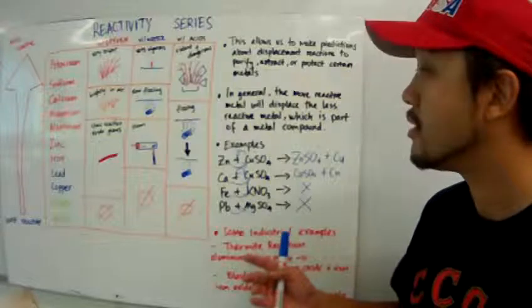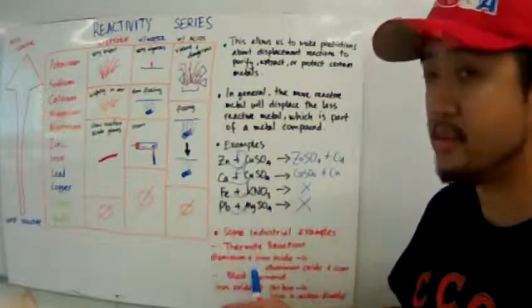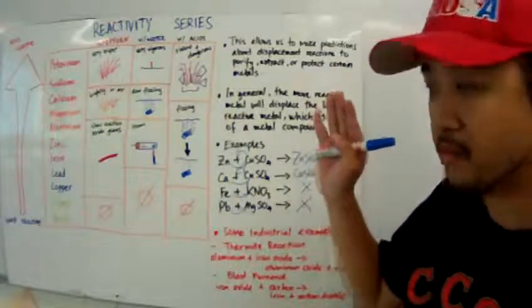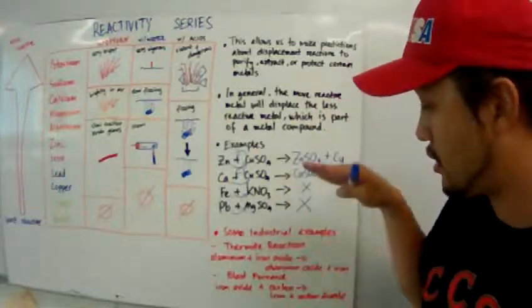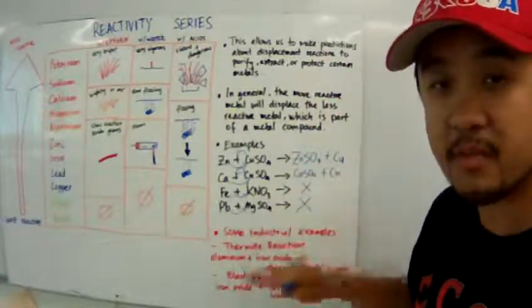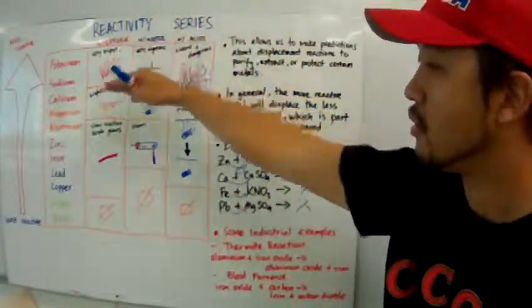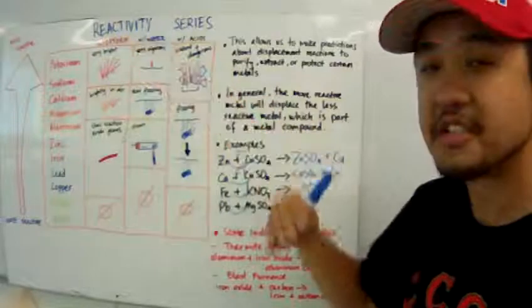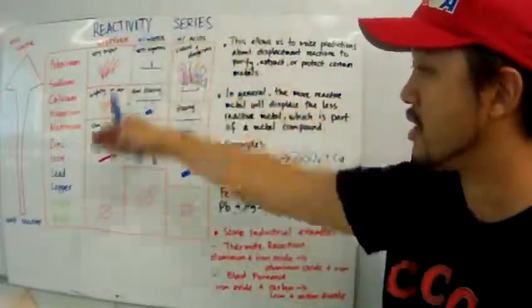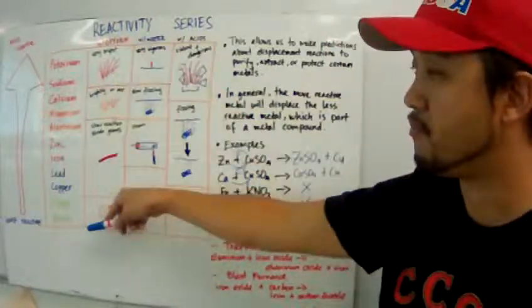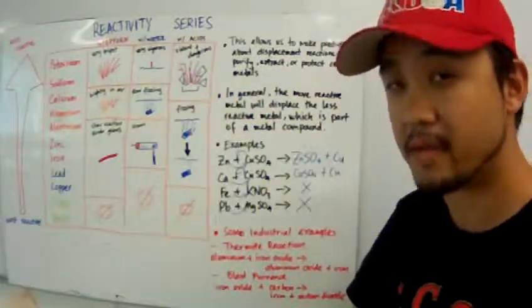So, there you go. Some examples of reactivities, displacement series. Some examples of industrial applications of a displacement reaction. And us being able to predict whether a displacement reaction will occur inside a lab based on the reactivity of the metals.